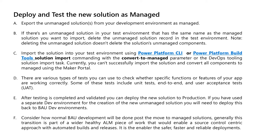Once you've created your new solution and added in all the unmanaged components, it's time to deploy that solution as managed into the target environment. Export the unmanaged solution from your dev environment as a managed solution. If there's an unmanaged solution in your existing target environment with the same name, the solution will not be able to import — so you will either need to delete that unmanaged solution in the target environment or ensure the new solution has a different name. You will need to import the solution using the Power Platform build tools or the PAC CLI, making sure you use the convert to managed option parameter. After testing is completed and validated, you can deploy the new solution to production. If you've used a separate dev environment for creation, you will need to deploy this back to BAU dev environments first.